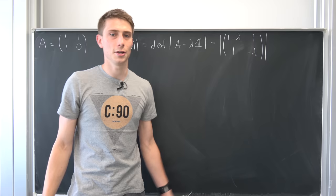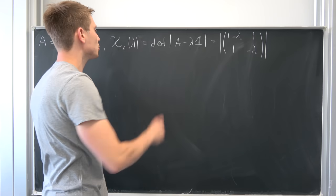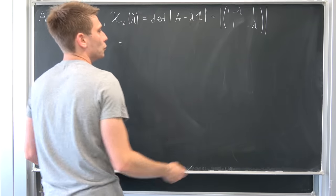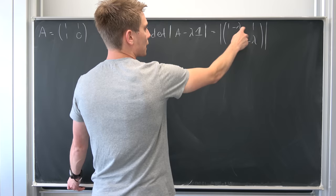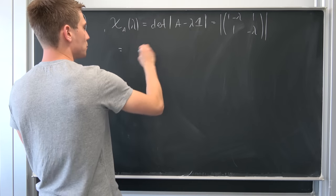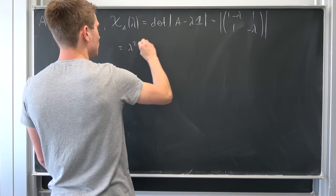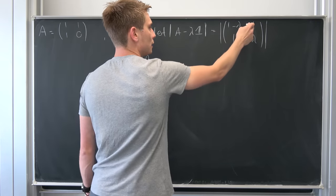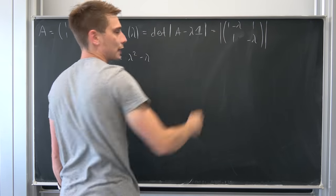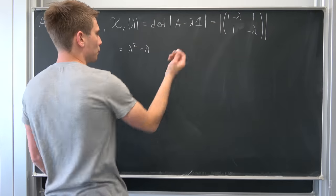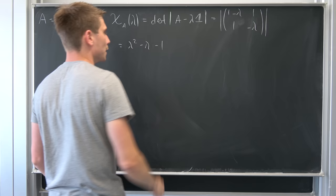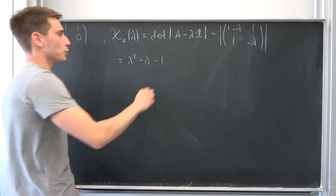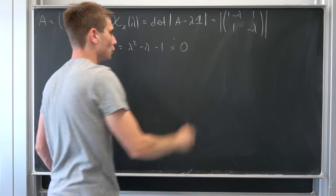What's the determinant of that? That's quite easy to compute. We end up with multiplying (1-lambda)(-lambda), which gives lambda squared minus lambda, and then subtracting the product of one and one, so subtracting one. We want this characteristic polynomial to be equal to zero: lambda squared minus lambda minus 1 = 0.